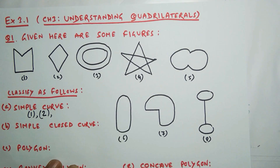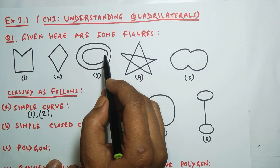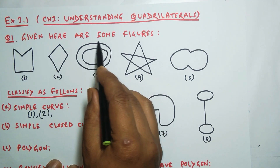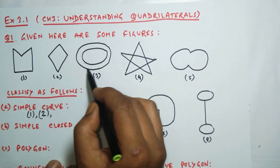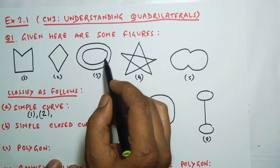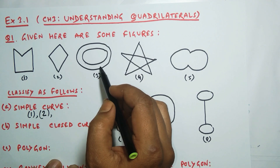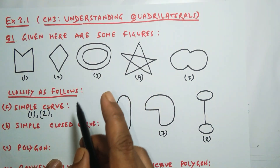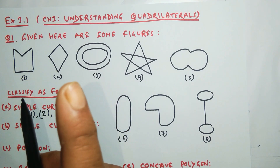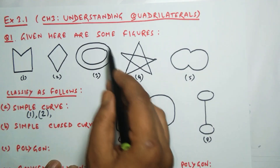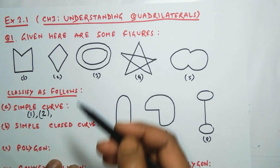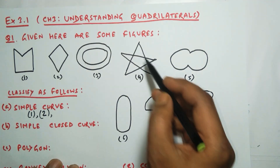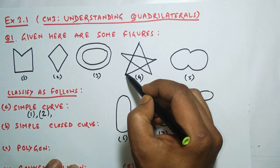Look at number three. It is not one curve — one curve is here and another curve is here, so this is not one curve; it has two curves. The question is about a simple curve, which is only one curve that does not intersect. Since number three has two curves, we cannot take it as a simple curve.